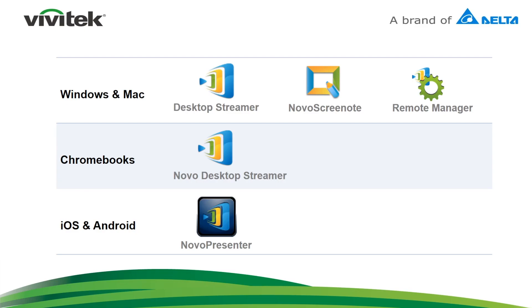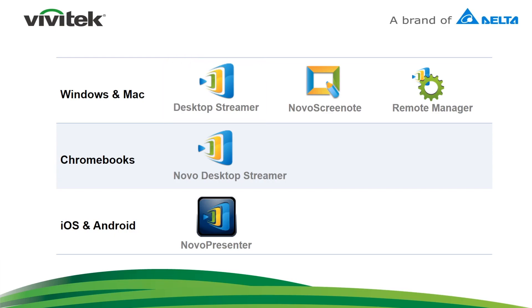There is a complete software suite provided for Novo Pro that makes collaboration between devices on various platforms a reality. For Windows and Mac computers, Desktop Streamer is the presentation and collaboration software. You will need this to connect to a Novo Pro device. The equivalent app for mobile devices is called Novo Presenter.